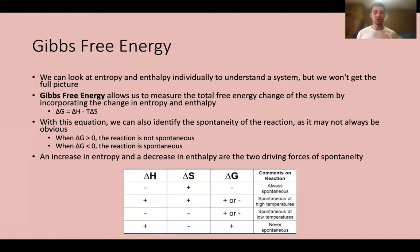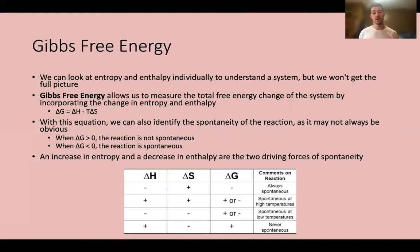Using Gibbs, we can identify the spontaneity of a reaction. When delta G is positive (greater than zero), the reaction is not spontaneous — we call that an endergonic reaction. When delta G is negative, the reaction is spontaneous, and we call that an exergonic reaction. Note the similar terminology to exothermic and endothermic, but don't confuse them — we can have an exergonic spontaneous reaction that is endothermic.